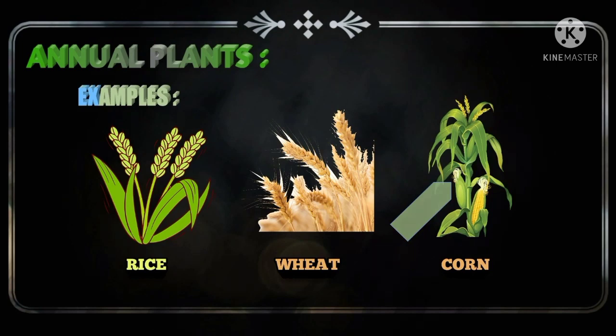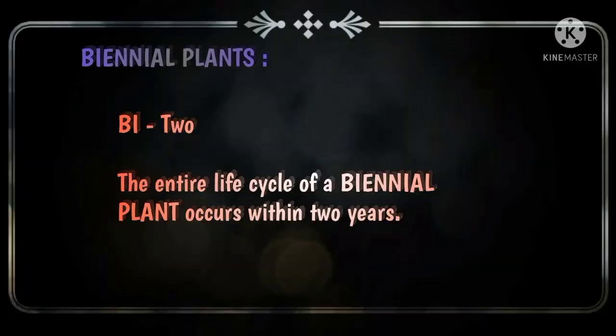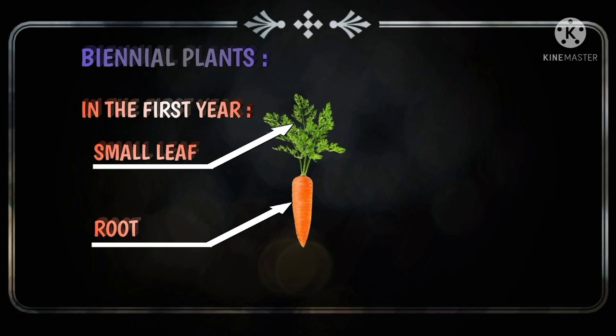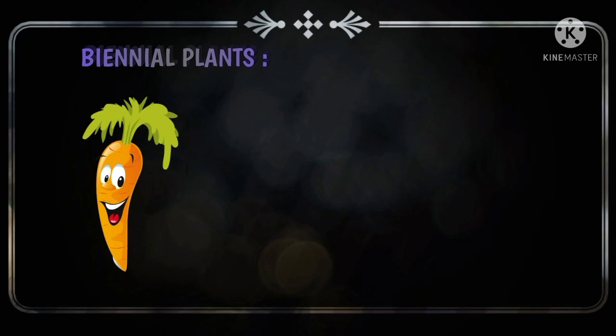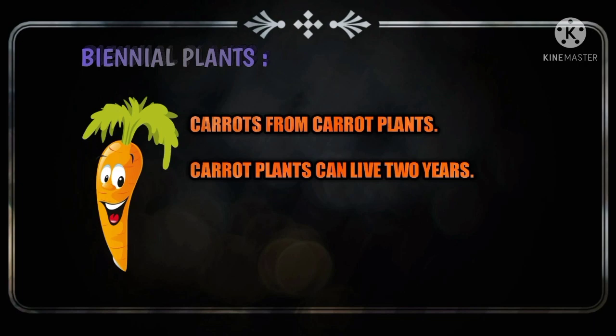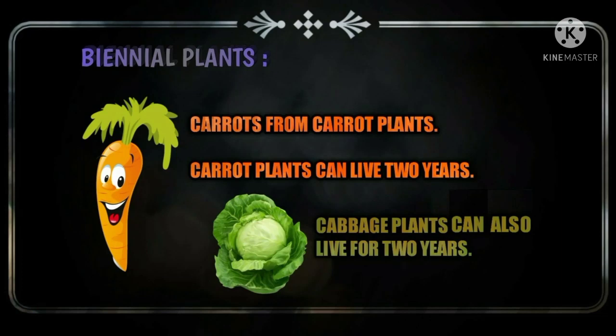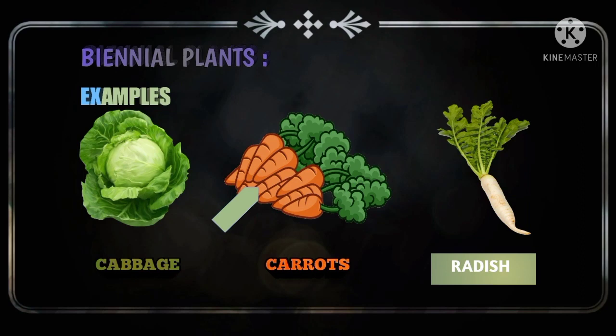Next, biennial plants. Bi means two. The entire life cycle of a biennial plant occurs within two years. The first year, these plants grow roots below the ground and small leaves near the surface. At the end of the first season, the parts of the plant above the ground may die, but the roots remain. A carrot plant can live for two years, so its lifespan is two years. Cabbage plants also live for two years. So, the plants which live for two years are called biennial plants. For example, cabbage, carrot, radish, etc.